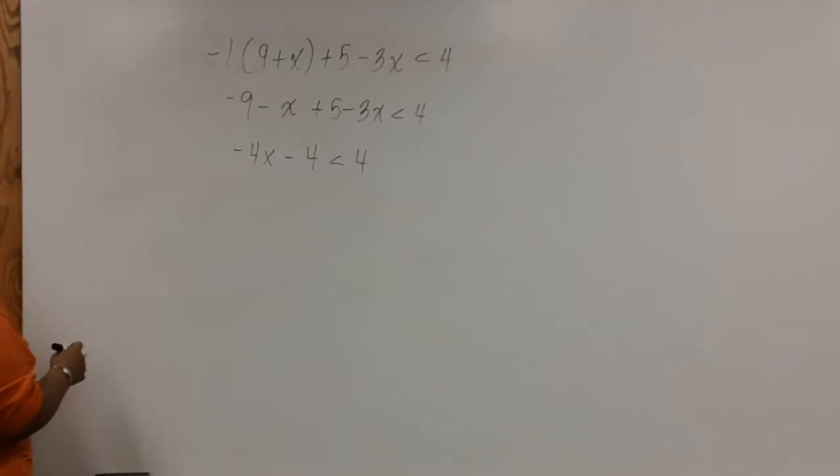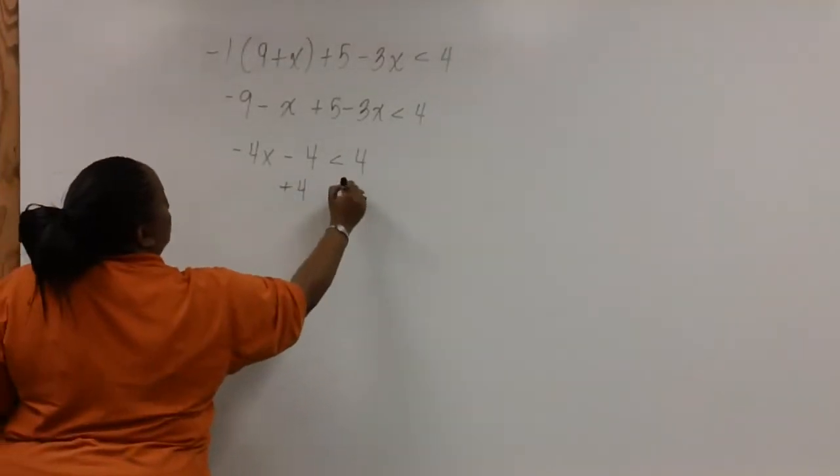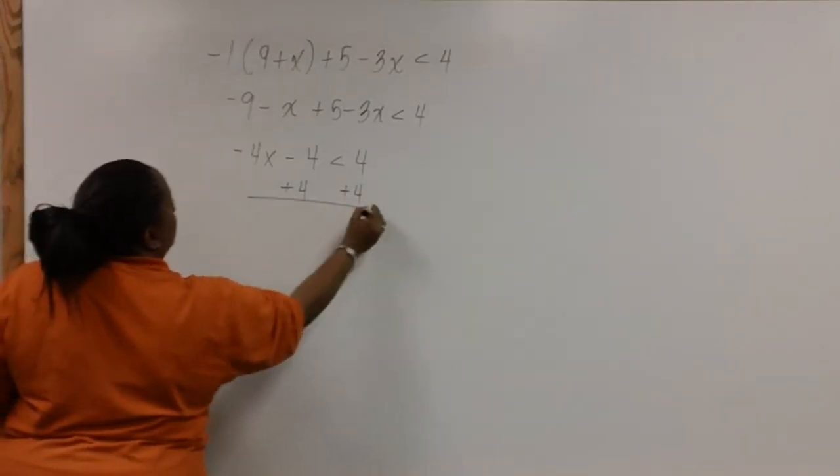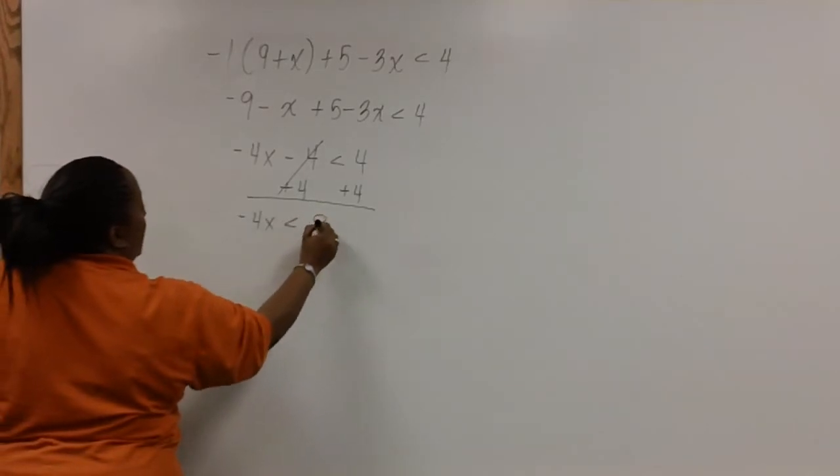Now we need to add 4 to both sides so that we can have negative 4x by itself. And we're left with negative 4x less than 8.